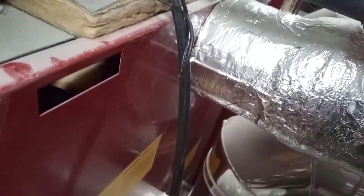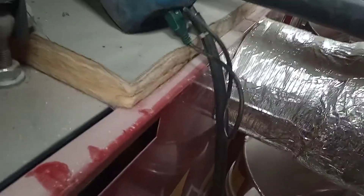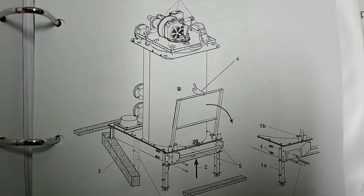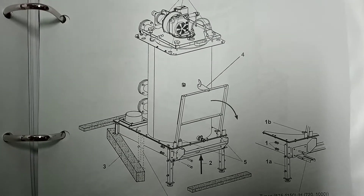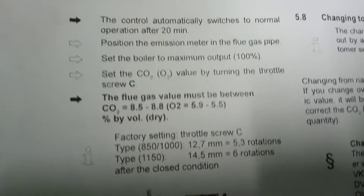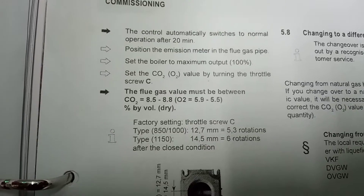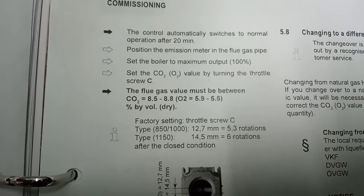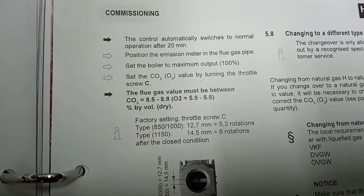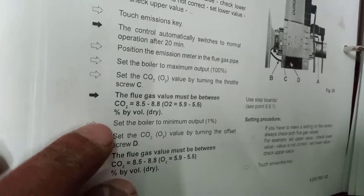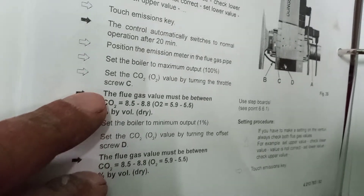Just getting my flue readings from the back and having a look at my manual. Our high fire reading should be 8.5 to 8.8 on CO2, and 5.9 to 5.5 on O2. It looks exactly the same for low fire and high fire — there's no difference.